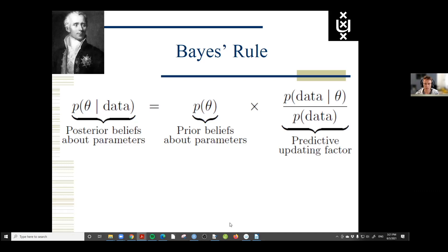This is Bayes' rule, and it consists of three key ingredients. We start our Bayesian learning process with our prior beliefs about parameters — which could be propositions, hypotheses, accounts of the world, something we don't know about. Theta represents something we wish to learn about. What we end up with after having seen data are our posterior beliefs — our updated beliefs about particular states of the world. Bayes' rule dictates how we change our knowledge from before to after seeing the data. The change from prior to posterior is given by the third ingredient: the predictive updating factor.